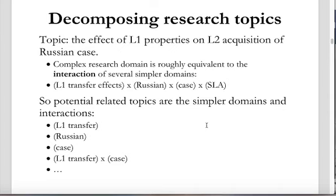I'm referring to this as decomposing or factorizing research topics. The complex research domain is going to be roughly the interaction of several simpler domains. So there's the general phenomenon of L1 transfer — that's a research domain. And then there's the question of how that L1 transfer thing interacts specifically with the Russian language or Russian grammar.